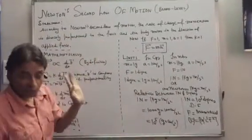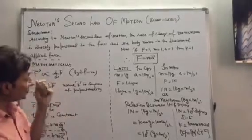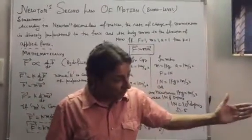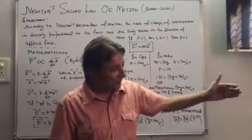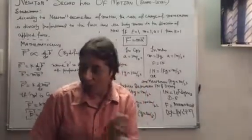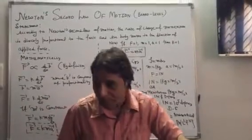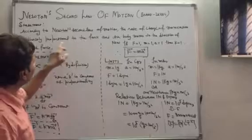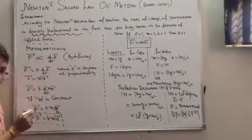According to Newton's second law of motion, the rate of change of momentum is directly proportional to the force, and the body moves in the direction of applied force. Students, say a cricket ball - when a batsman hits the ball, the ball's motion, the ball's momentum changes. To change the momentum, we need to apply force. So the rate of change of momentum is directly proportional to the force. Any question?